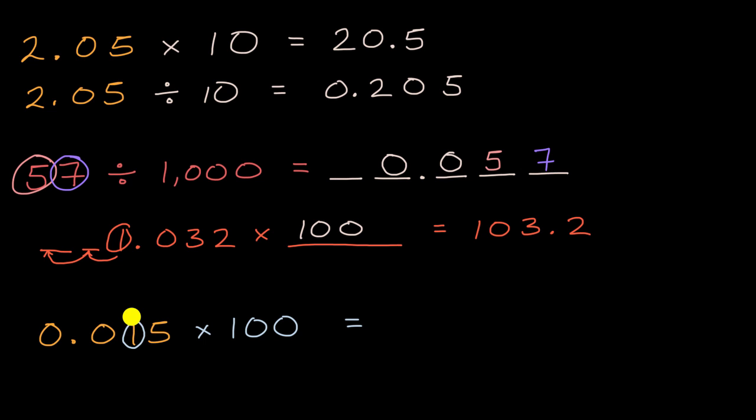The one, which is in the hundredths place, ends up in the ones place. The five, which is in the thousandths place, ends up in the tenths place. So this equals 1.5. And we're done.